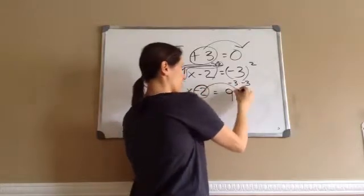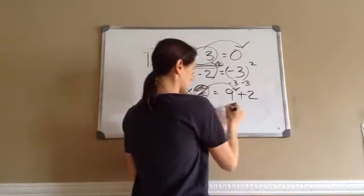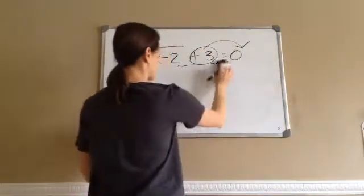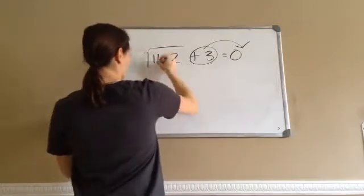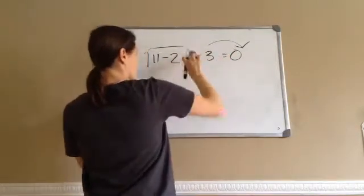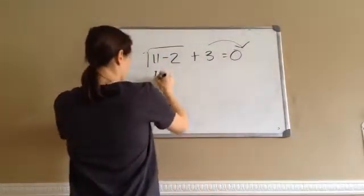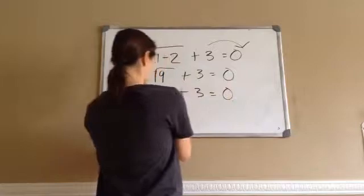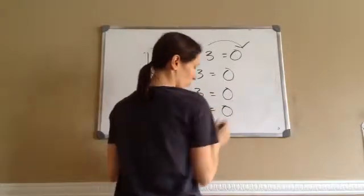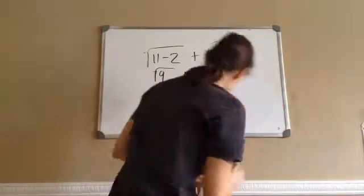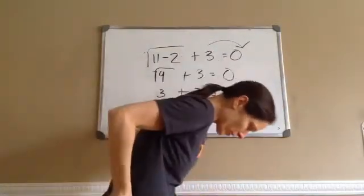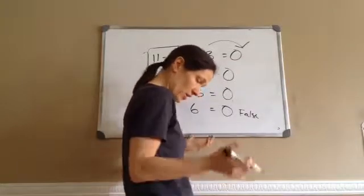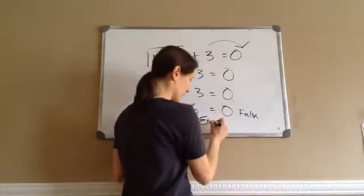So x − 2 = 9, which gives x = 11. Now let's check: put 11 back into the original problem. 11 minus 2 is 9 plus 3 equals 0. Square root of 9 is 3. 3 plus 3 is 6. Does 6 equal 0? No. Since this is false, the solution set of this equation is empty — an empty set.